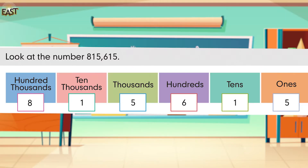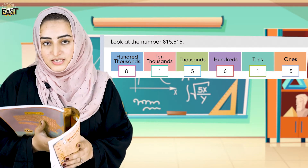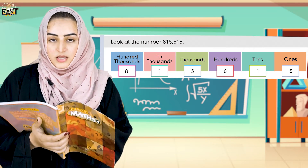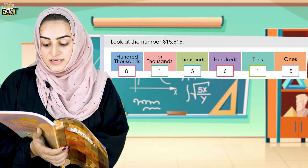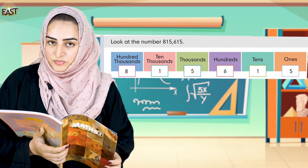Now we can see another example: 8, 1, 5, 6, 1, 5. Again: five in ones, one in tens, six in hundreds, five in thousands, one in ten thousands, and eight in hundred thousands. So how can we read it? We can read it as: eight hundred fifteen thousand, six hundred and fifteen. This is the international place value system.